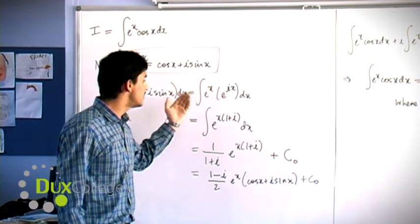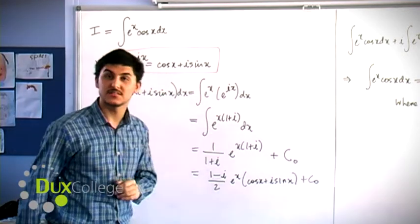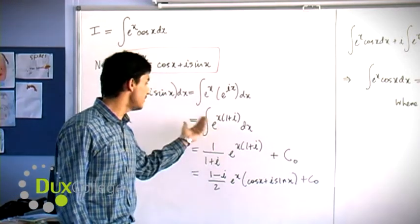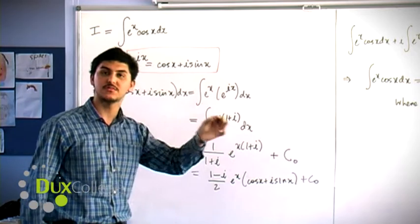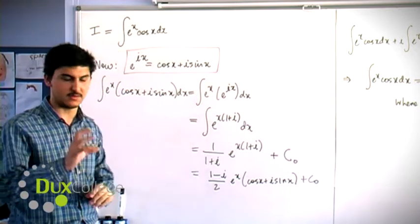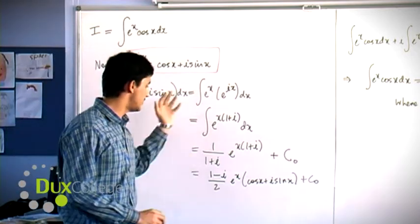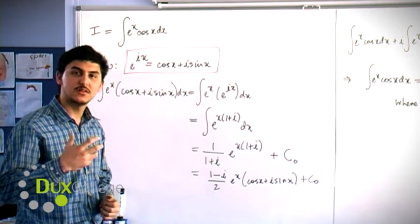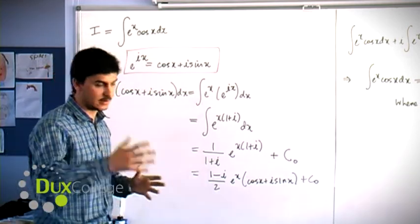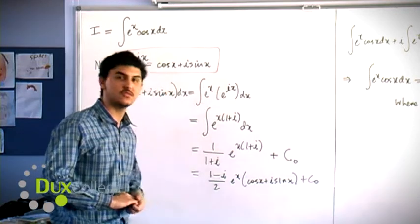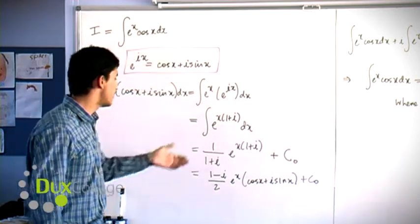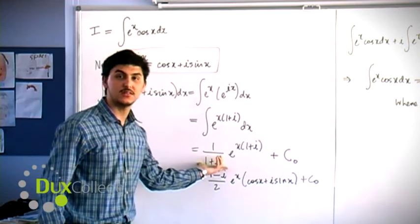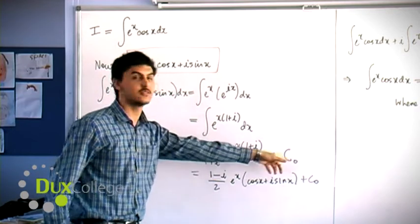Pulling out x gives us e^(x(1+i)). Assuming we can integrate complex numbers, when integrating an exponential times a constant in the exponential, you divide by that constant and add a constant of integration. So e^(x(1+i)) is evaluated as 1/(1+i) times e^(x(1+i)) plus a constant C₀.